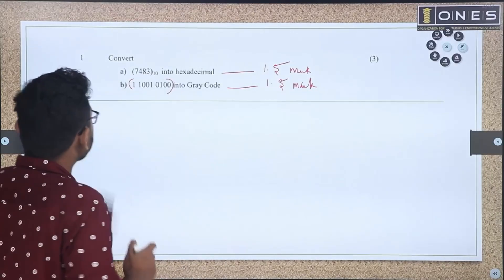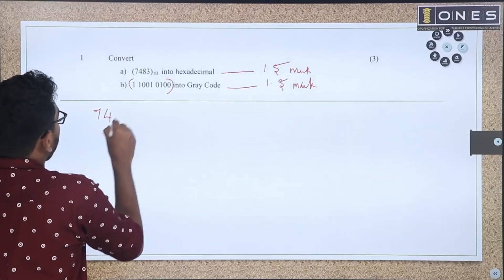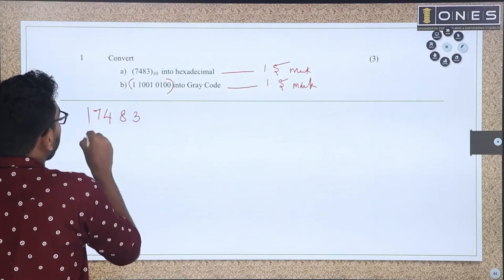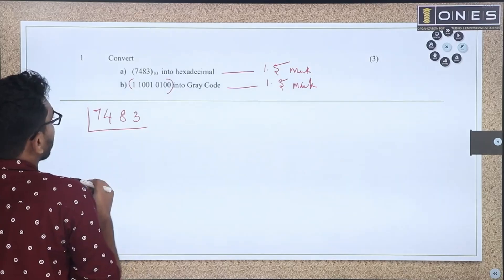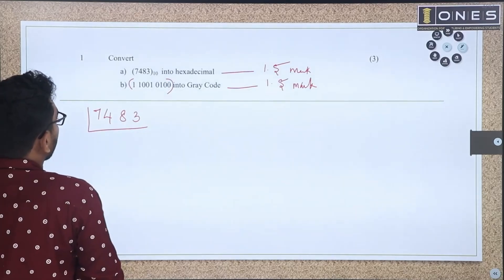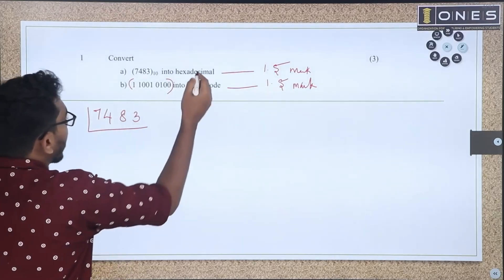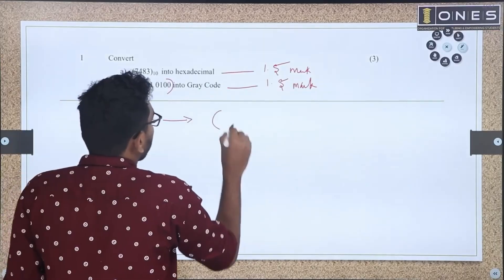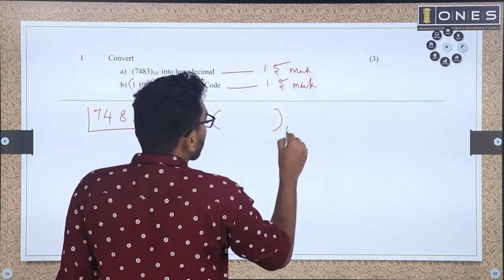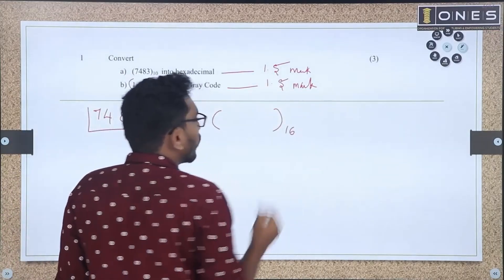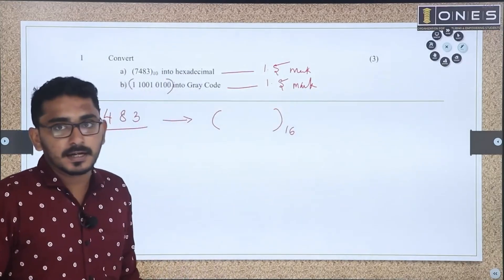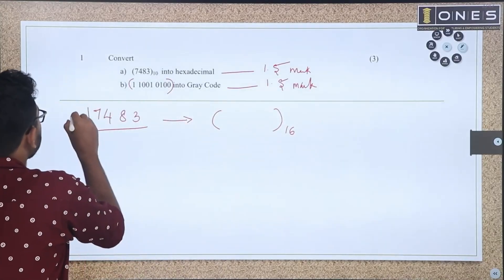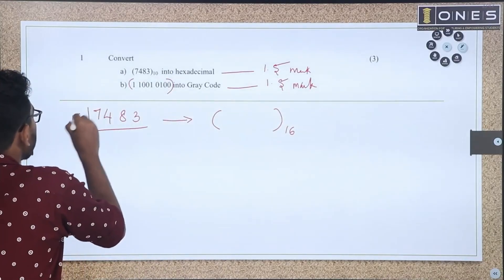For the conversion, the number is 7483. It needs to be converted into hexadecimal — that is, base 16. To convert to hexadecimal, we repeatedly divide by 16 and record the remainders.